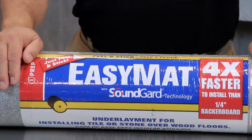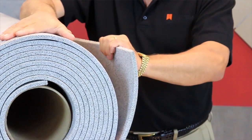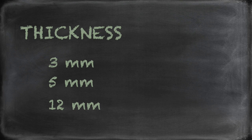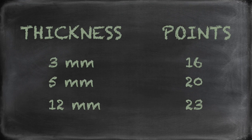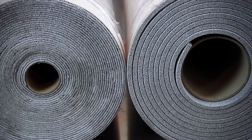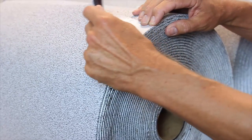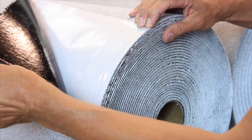One option to consider is Custom's Easy Mat Tile and Stone Underlayment with patented SoundGuard technology. This is a polypropylene mat that will not be affected by moisture, as will cork and other products that tend to deteriorate. It's available in 3, 5, and 12 millimeter thickness options that contribute 16, 20, or 23 points toward the total IIC rating, so you can select the right one based on the needs of your project. Easy Mat is also 25 times lighter than backer board and bonds quickly to the substrate with a polymer modified thinset mortar. When you need to work even faster, Easy Mat comes in a peel and stick version that's four times faster to install versus backer board.